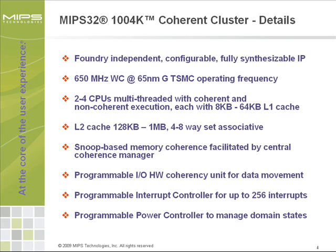Concluding the introduction of the 104K cluster, a few technical details. The 104K is a silicon foundry-independent, configurable, and fully synthesizable IP, provided as RTL accompanied by EDA flow scripts supporting all major EDA vendors and silicon foundry libraries. The cluster operates at 800 MHz worst case for a TSMC 65nm GP silicon process. It can be configured from 2 to 4 CPUs, each in dual-threaded coherent and non-coherent execution. Level 1 cache sizes are configurable between 8 KB and 64 KB. The system level 2 cache is configurable between 128 KB and 1 MB and is 4- to 8-way set associative. The system implements snoop-based MESI-style coherence through a centralized coherence manager, with an optional IO coherence unit, a programmable interrupt controller, and a power management controller.